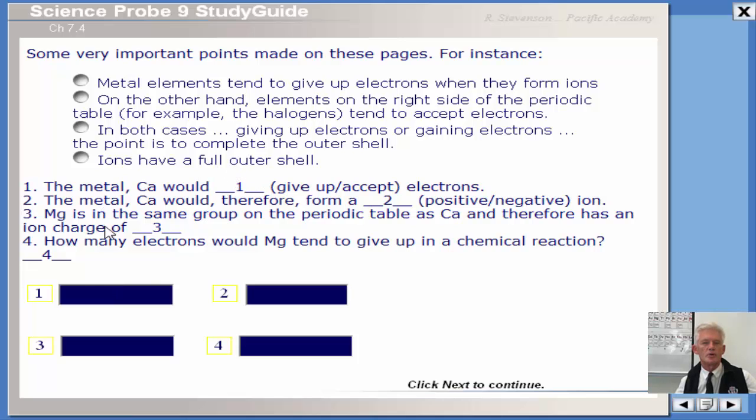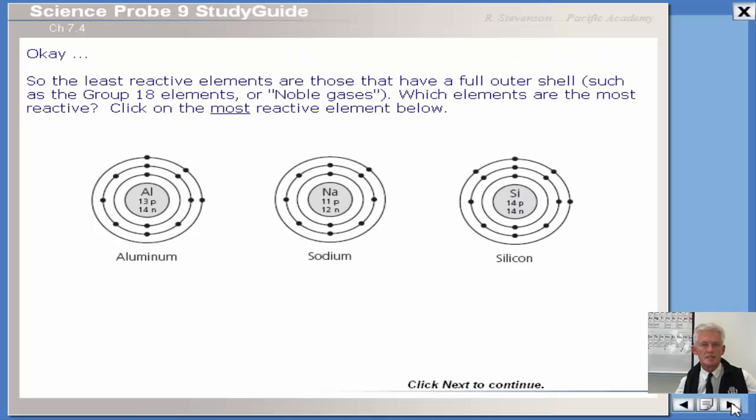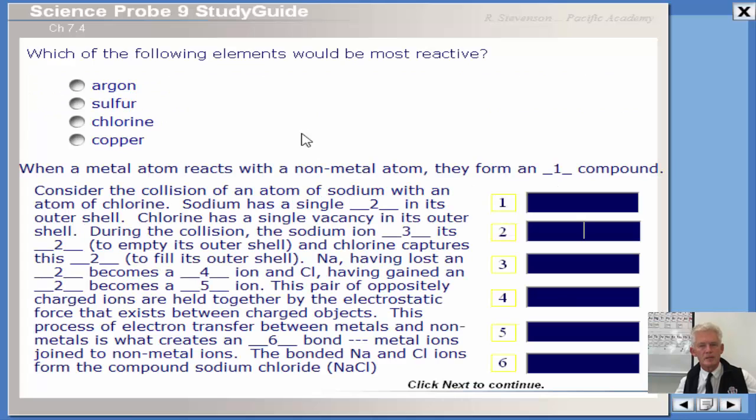So in both cases, giving up electrons or gaining electrons, the point is to complete the outer shell or octet. Ions have a full outer shell. I think these four questions will kind of measure your understanding of that point. I'm going to leave you with them. Then we basically ask you to do a little practice, more practice. You know what I'm thinking? I'm thinking that if you have read Section 7.4, gone through some of this, done the Bohr diagram worksheet, you shouldn't have any problem with the rest of this. If you do, hey, that's what class time is for. Get help from your peers, get help from me.